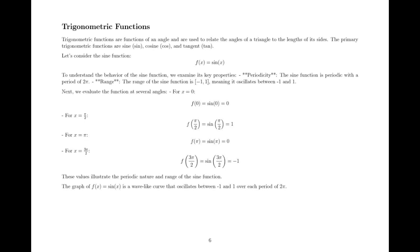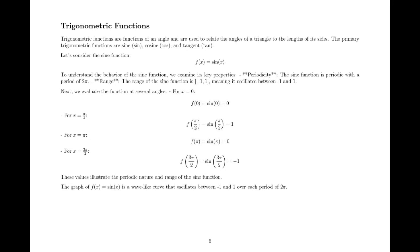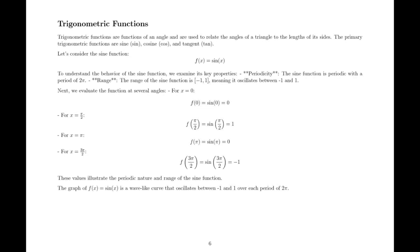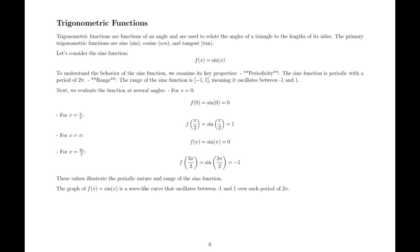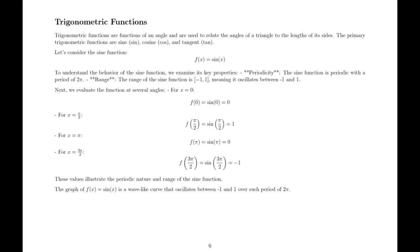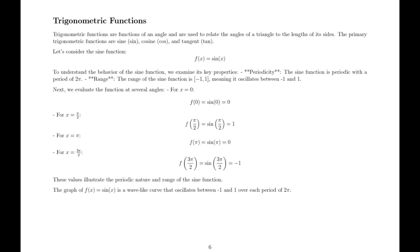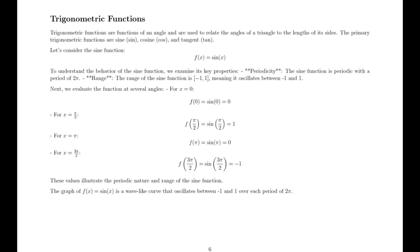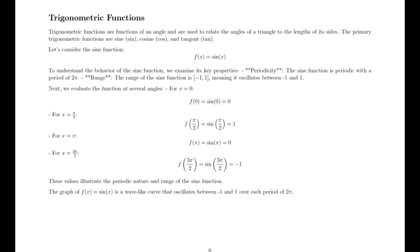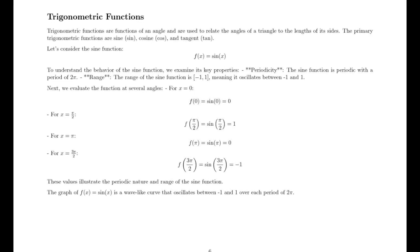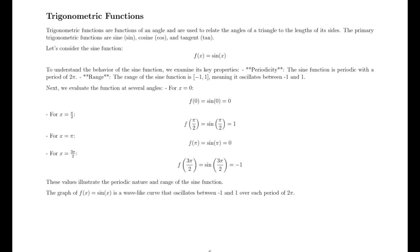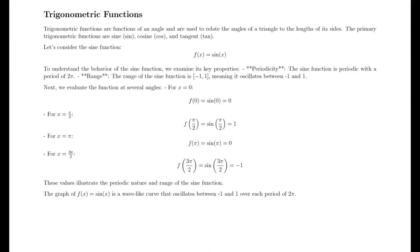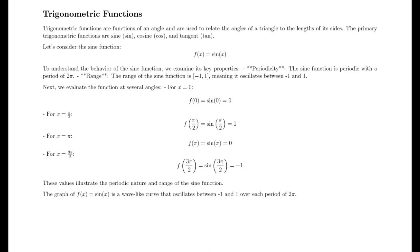Next, we evaluate the function at several angles. For x = 0, f(0) = sin(0), which is 0. For x = π/2, f(π/2) = sin(π/2), which is 1. For x = π, f(π) = sin(π), which is 0. For x = 3π/2, f(3π/2) = sin(3π/2), which is -1. These values illustrate the periodic nature and range of the sine function. The graph of f(x) = sin(x) is a wave-like curve that oscillates between -1 and 1 over each period of 2π.